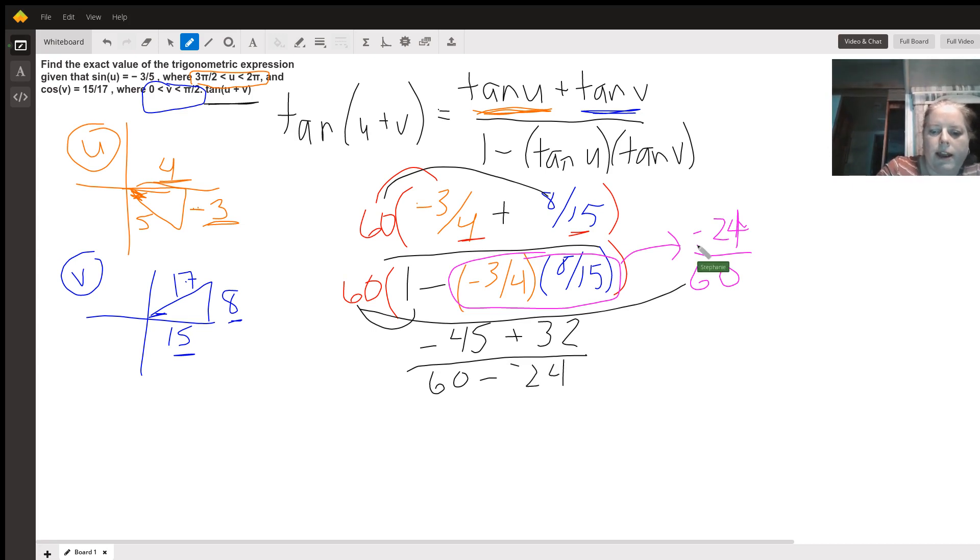But there was already a negative in the problem. So when we simplify that, we get negative 13 over 60 plus 24, which is 84. And that's our final answer.